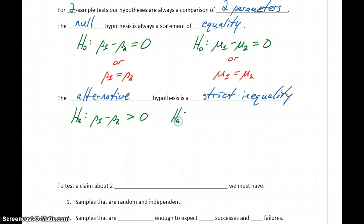p1 minus p2 is something less than zero, or p1 minus p2 is simply not equal to zero.